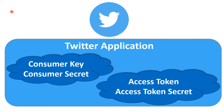The first thing we are going to do is create a Twitter application. To create this Twitter application, we need four things: the consumer key, consumer secret, access token, and access token secret.